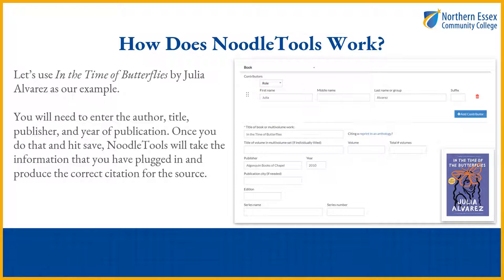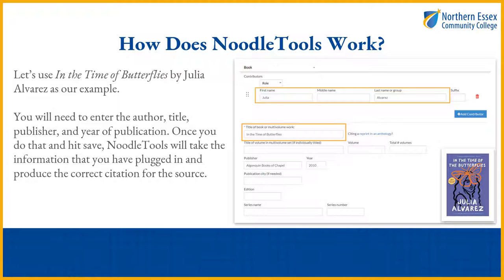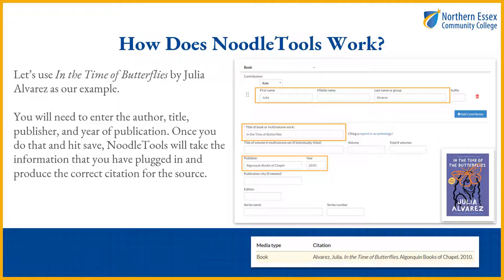Let's use In the Time of Butterflies by Julia Alvarez as our example. You will need to enter the author, the title, the publisher, and the year of publication. Once you do that and hit save, NoodleTools will take the information you have plugged in and produce the correct citation for the source.